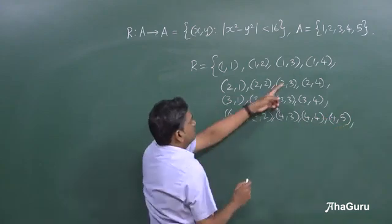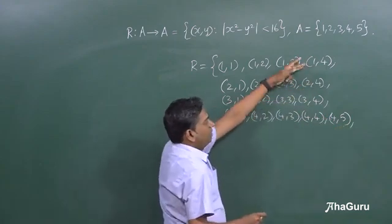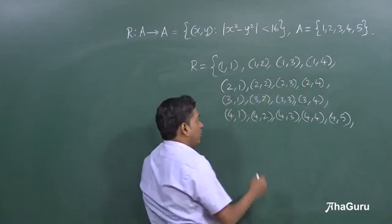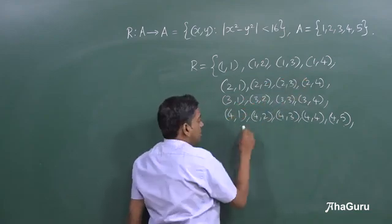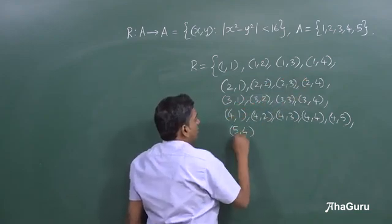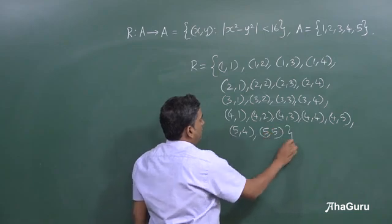With 5, what we really saw is that 5, 1 and 5, 2 and 5, 3 cannot work because we already checked here. So, the only things that are going to work are 5, 4 and 5, 5.